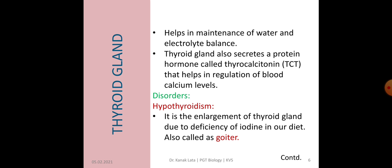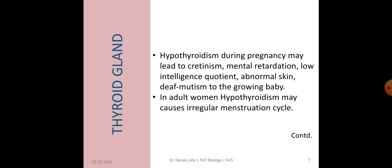Now let us see what disorders are caused due to improper functioning of thyroid gland. First is hypothyroidism. In hypothyroidism, there is enlargement of thyroid gland due to deficiency of iodine in our diet. This disorder is called Goiter. If a pregnant lady is suffering from hypothyroidism, then her growing baby may lead to cretinism, mental retardation and low intelligence.